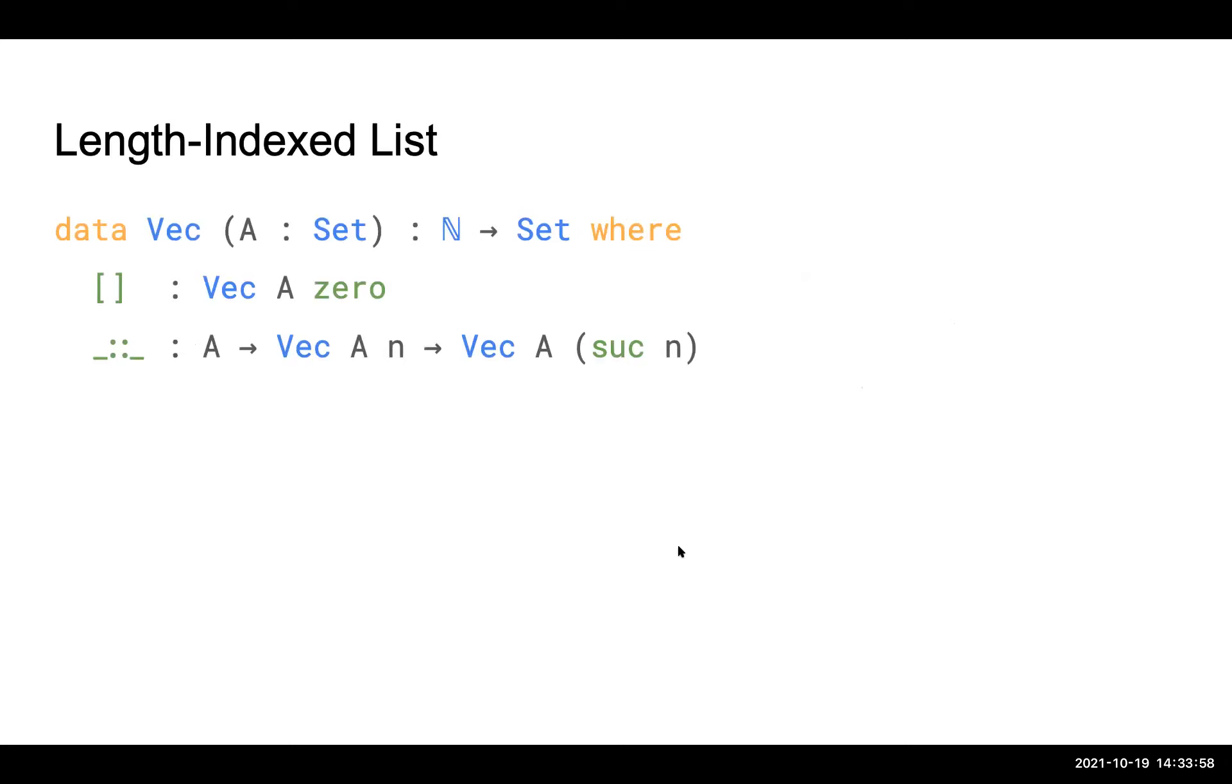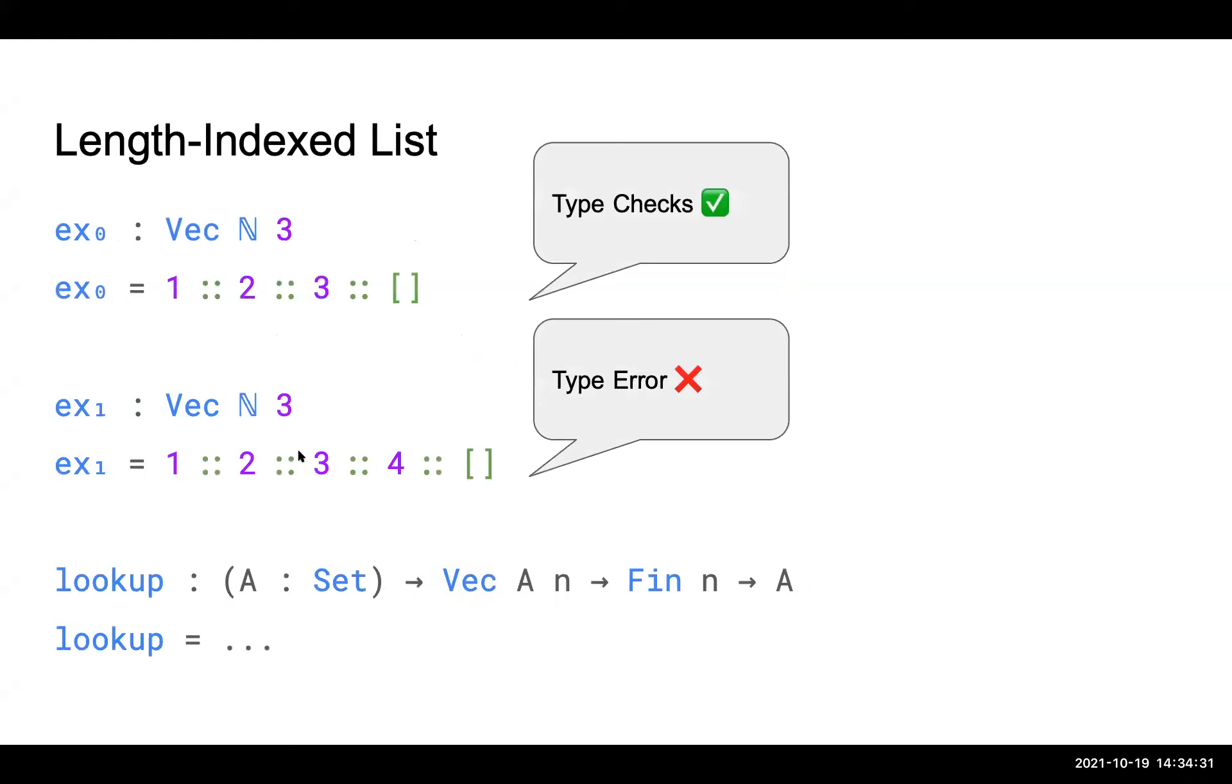One of the standard examples to define dependent types is the length-indexed list, which is also called Vec. Here's the Vec definition from the Agda standard library. It's parameterized over underlying element type A, and it has two constructors. One is the empty Vec, which has index zero, meaning it has length zero, and another is the cons constructor. It takes a Vec of length n and returns another Vec of length n plus one. Pretty straightforward. So with this length-index Vec definition at hand, we can write some interesting programs. Here we are saying we want a Vec of natural number of length three. So if you give it a vector with more than three elements, it would be a type error at compile time. So that's one use of the Vec.